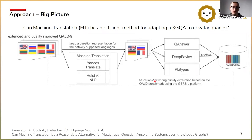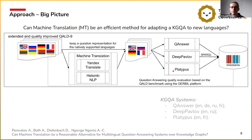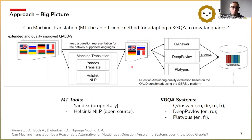So what is the big picture of our approach? We extended an existing knowledge graph question answering benchmark using many different languages created by native speakers. We used this data to evaluate three knowledge graph question answering systems, which support different sets of languages. First, we evaluated question answering quality for the native support of these languages. The second step was to add an intermediate translation module — if the language is unsupported, we translated it to a supported one and measured the resulting question answering quality.